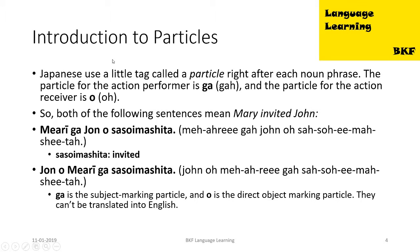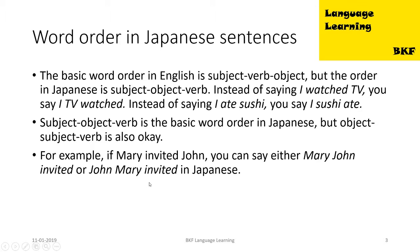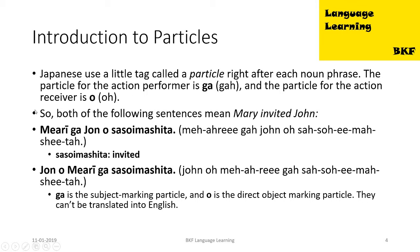Introduction to particles. The Japanese use a label tag called a particle right after each noun phrase. The particle for the action performer is 'ga' and the particle for the action receiver is 'o'. So after Mary we are going to use the 'ga' particle, which is the action performer particle, and after John we use the 'o' particle, which is the action receiver particle. That is how we decide that Mary is going to invite John and not vice versa.